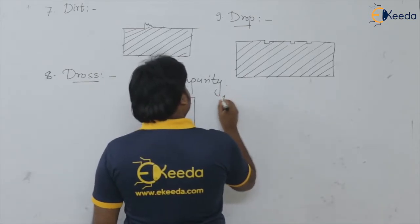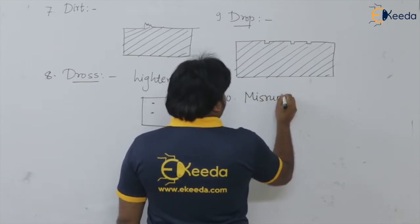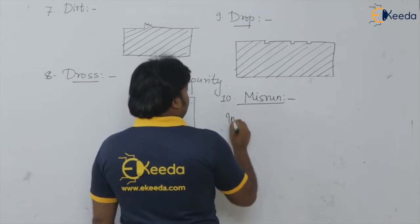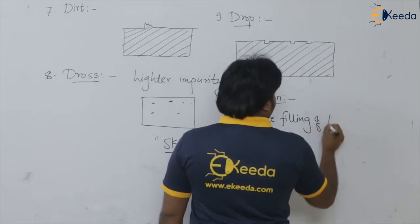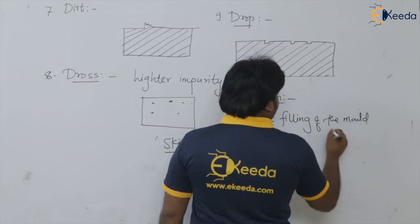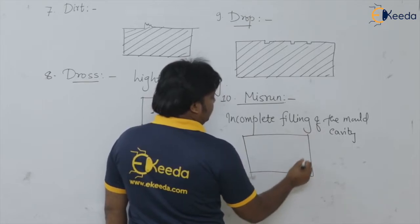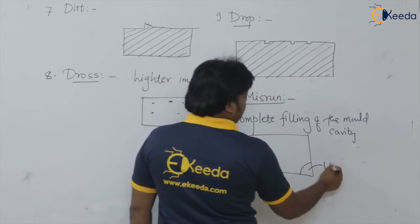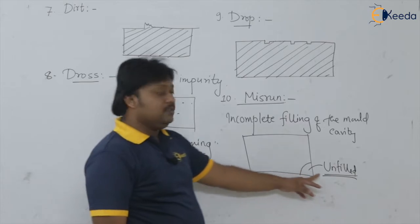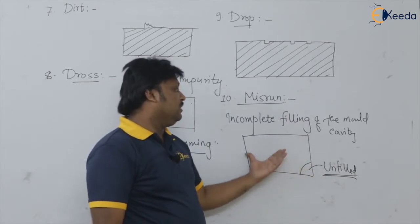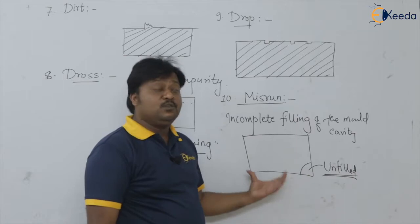Next we are having the defect known as misrun. Misrun is incomplete filling of the mold cavity. If this is a casting — the mold cavity — some part is unfilled or not filled. Why does this happen? Because before completely filling the mold, the casting gets solidified and the liquid melt cannot reach a particular corner in the mold cavity.